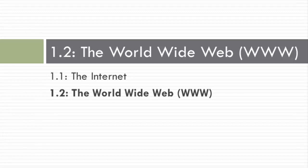In the last lecture, we looked at the Internet, which is the infrastructure that controls the communication processes as data travels from one location to another. The World Wide Web is really a collection of documents, images, and other information stored on the Internet. In this lecture, we'll look at what goes on behind the scenes and how the World Wide Web functions as a whole.